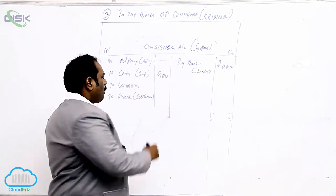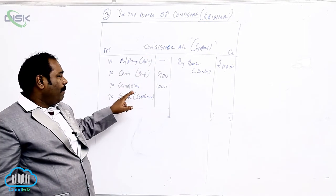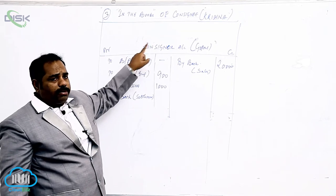On that 5% commission, it is an income to us. The entry is consigner debit to commission, because commission is income and consigner is to give us. Consigner becomes debtor to commission.